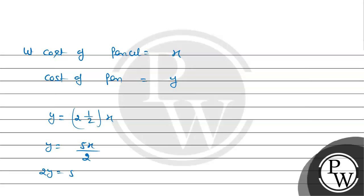Simplifying further: 2y equals 5x. Therefore, 5x minus 2y equals 0.